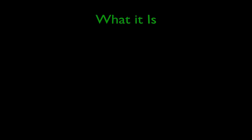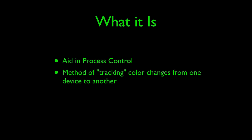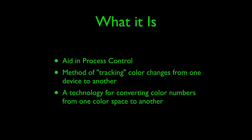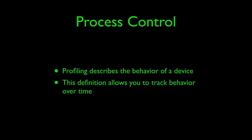So just what is color management? Well, color management helps us achieve process control. It is a way of measuring colors and sharing those measurements so that we can compare the performance of all the color hardware in the imaging chain. It is a method of tracking color changes from one device to another, and it's a technology for converting color numbers from one color space to another. In process control, we need a profile to describe the specific color behavior of a device — be it a monitor or a printer — so that we can track the device's behavior over time.